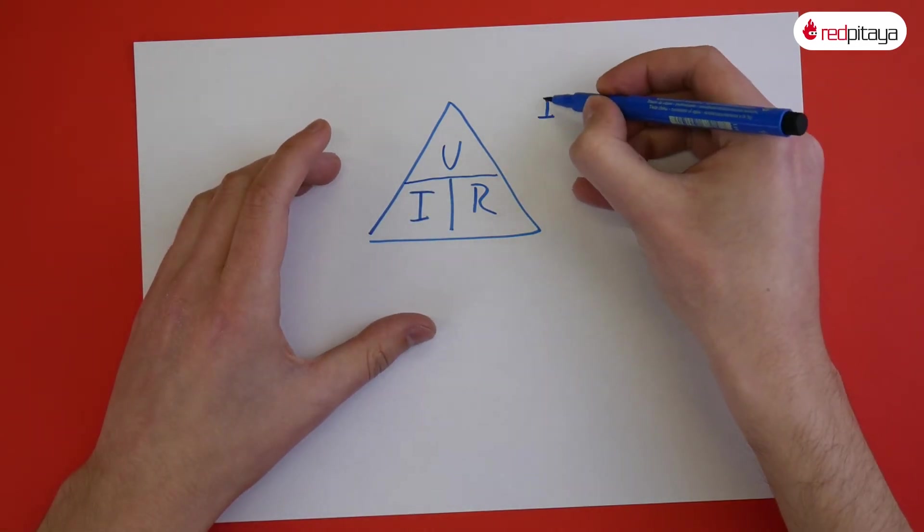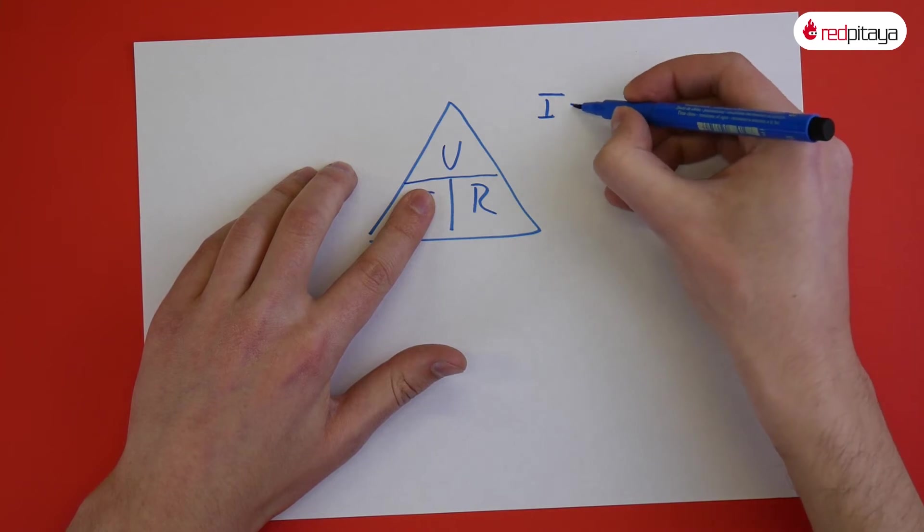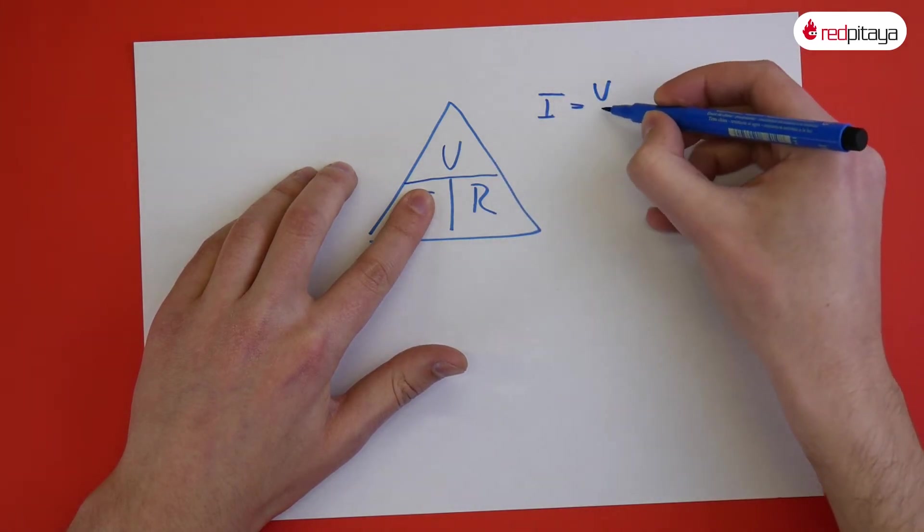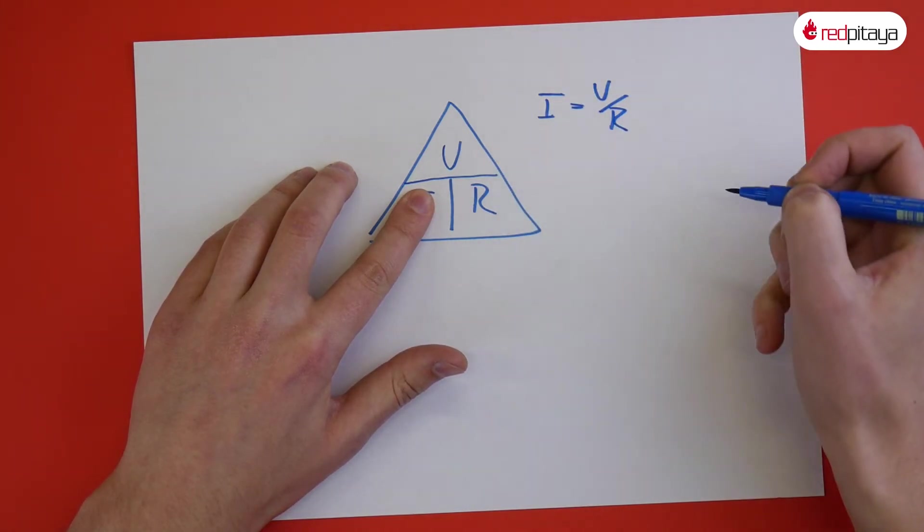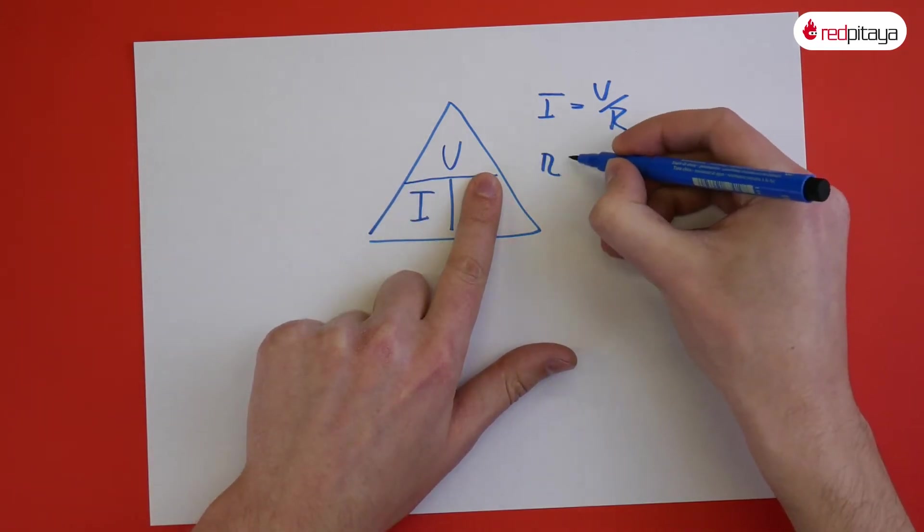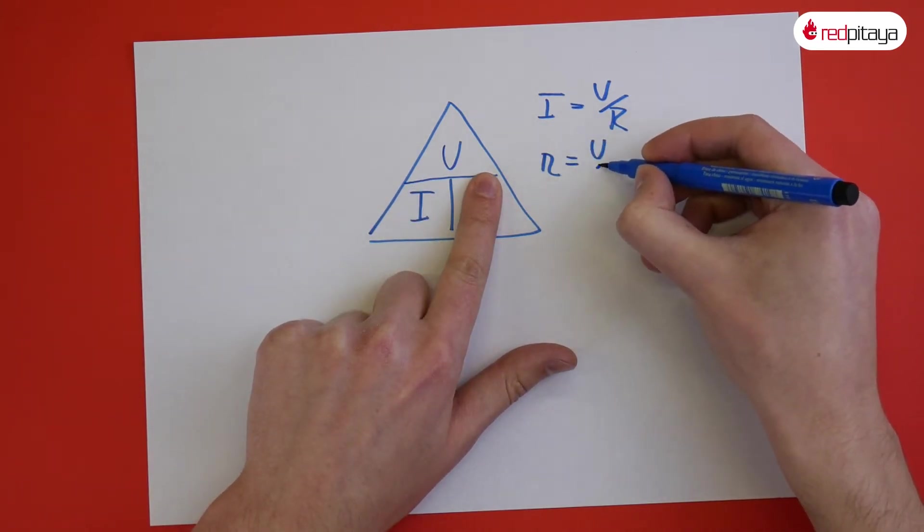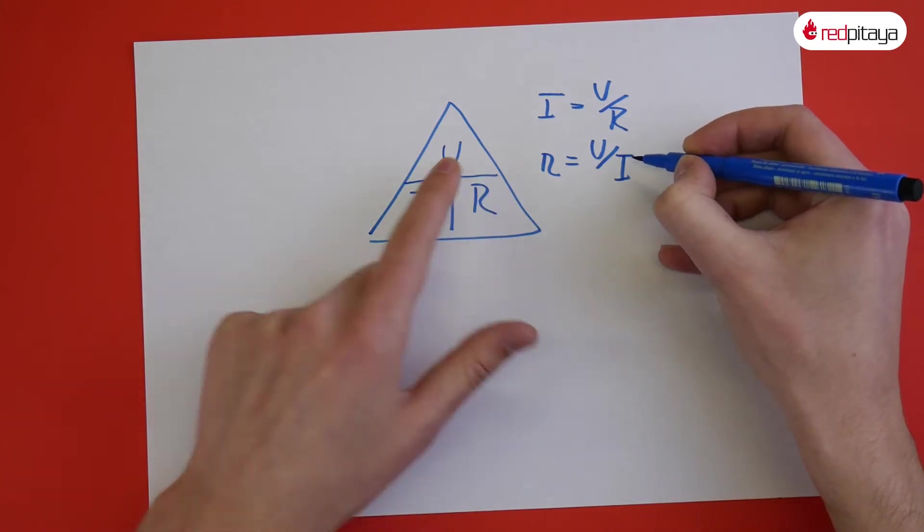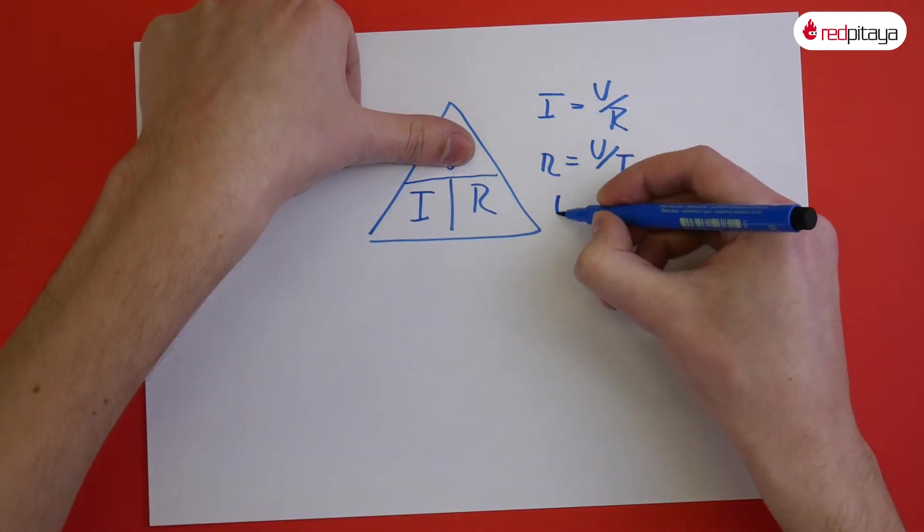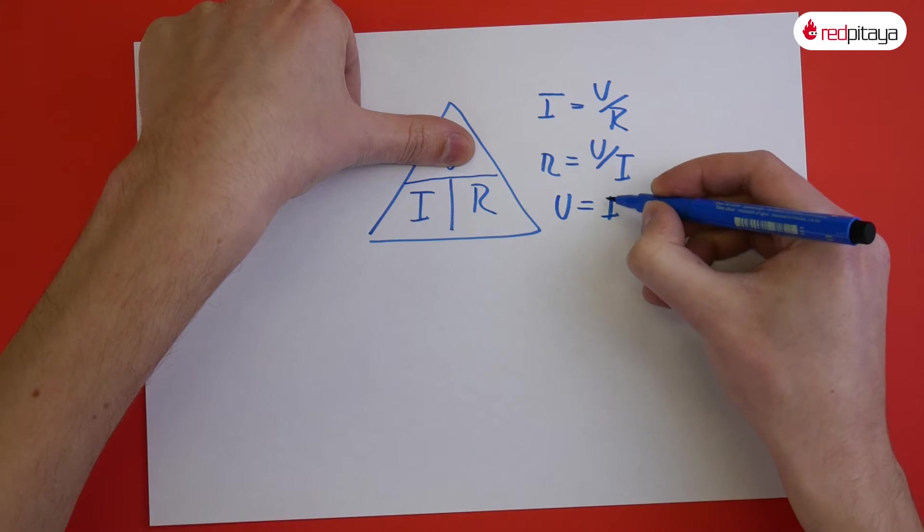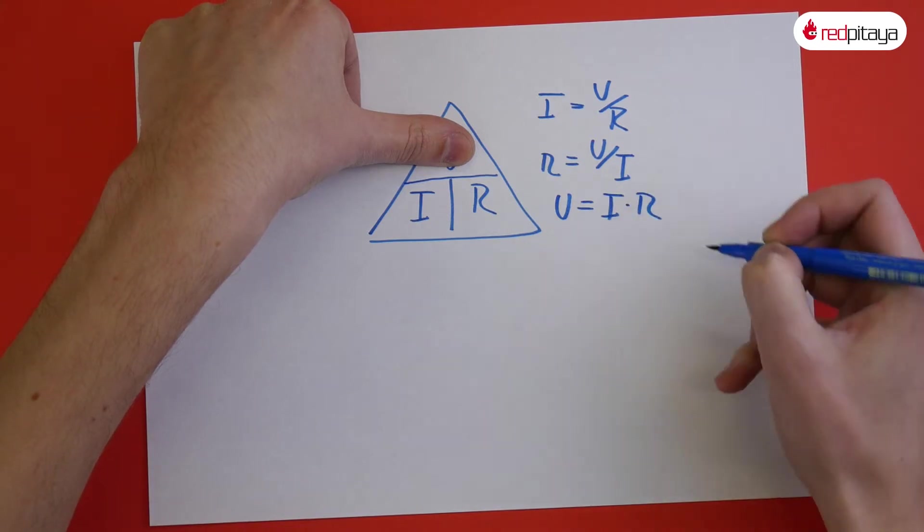Following this, we get current is voltage over resistance. Resistance is voltage over current. And voltage is resistance times current.